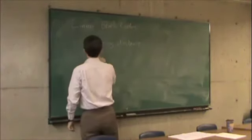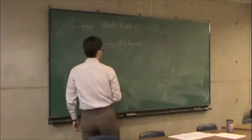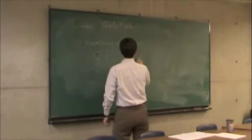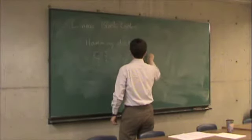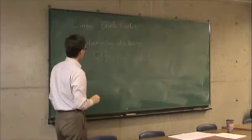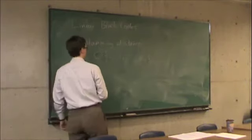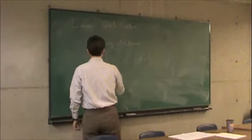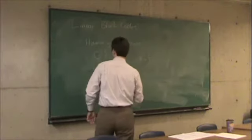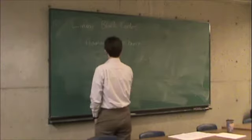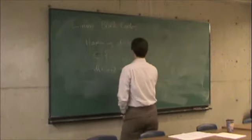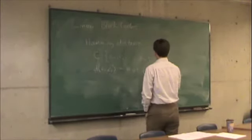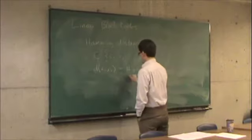So let's say C is a code. Then C contains code words C1, C2, and so on. The Hamming distance between any two code words, let's use D(C1, C2), is the number of places in which C1 and C2 are different.